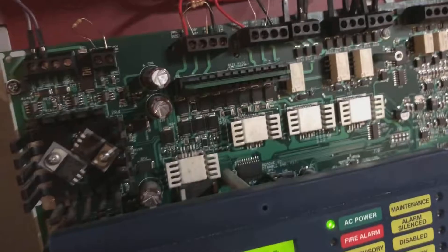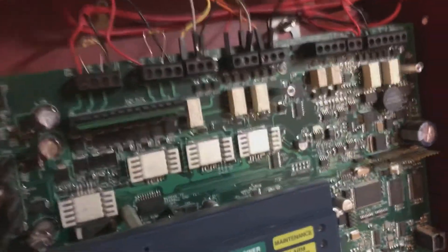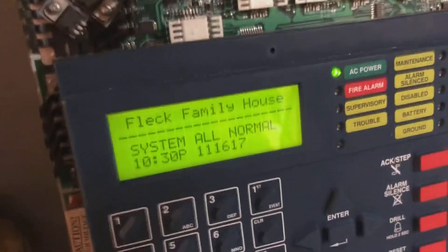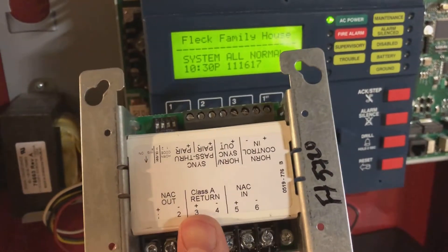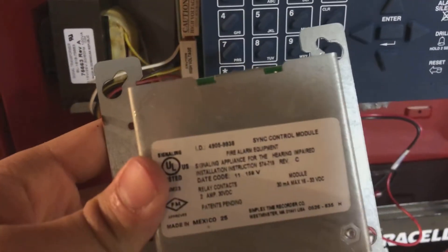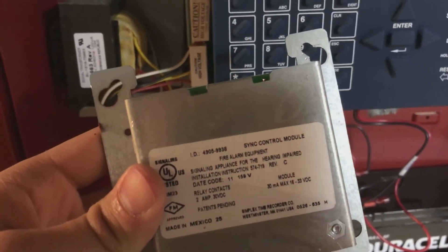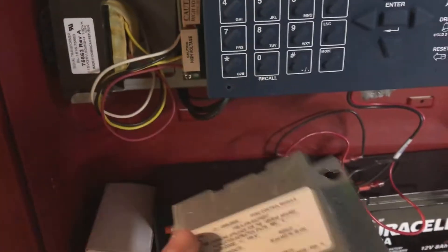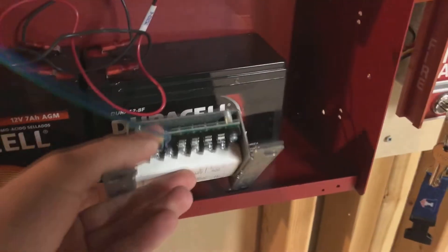Alright, in order to do this properly, because this puts out full wave rectified current and doesn't natively support Simplex sync, we need two different components. For starters, for syncing, we need a Simplex sync module - this one in particular, I believe, has a label on the back, is model number 4905-9938. And this module will allow us to sync, but it won't work properly if we don't have one of these guys.